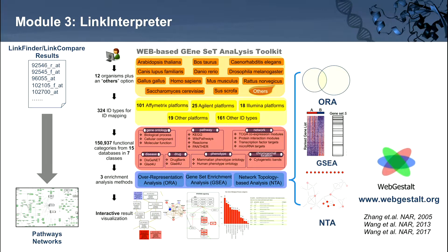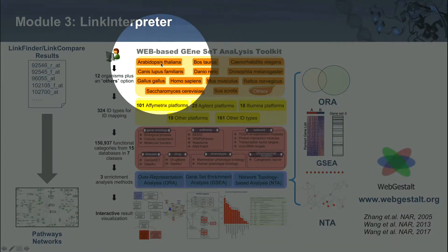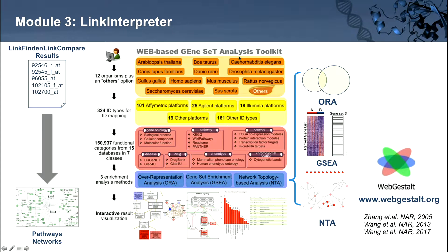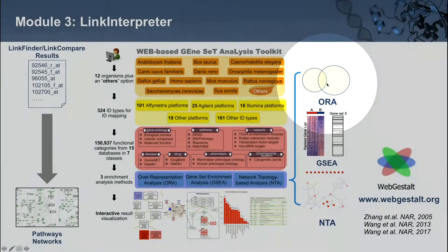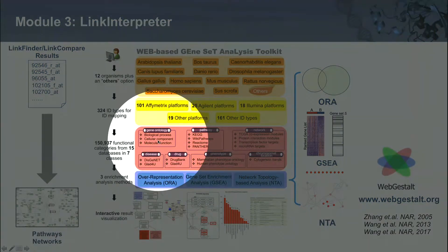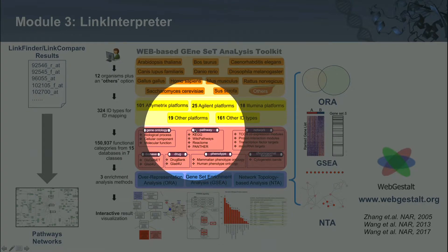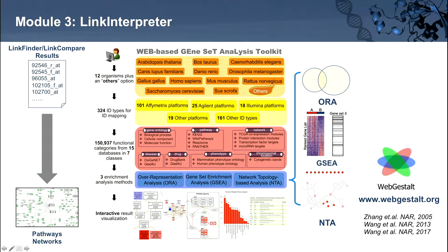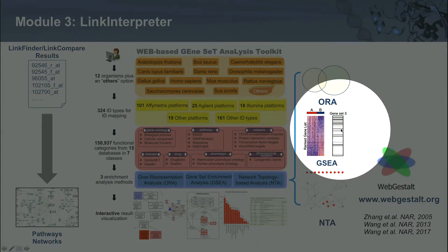The final module is LinkInterpreter, which is the pathway enrichment analysis and gene ontology enrichment analysis tool in LinkedOmics. LinkInterpreter calls upon another tool our lab developed called WebGestalt, a gene set analysis web-based tool. With WebGestalt, you can perform over-representation analysis for a set of genes showing significant association from LinkFinder or LinkCompare results, and determine whether there's statistically significant overlap with gene ontology databases and pathway databases such as KEGG and WikiPathways. Alternatively, you can use the GSEA algorithm with all association values to see if genes with strong association are enriched for a given pathway.